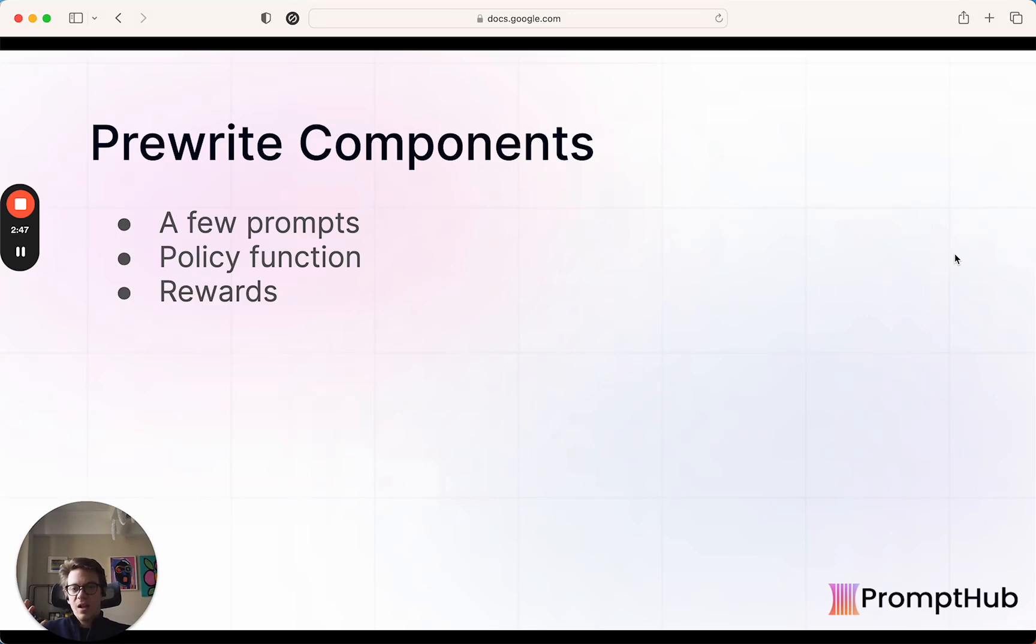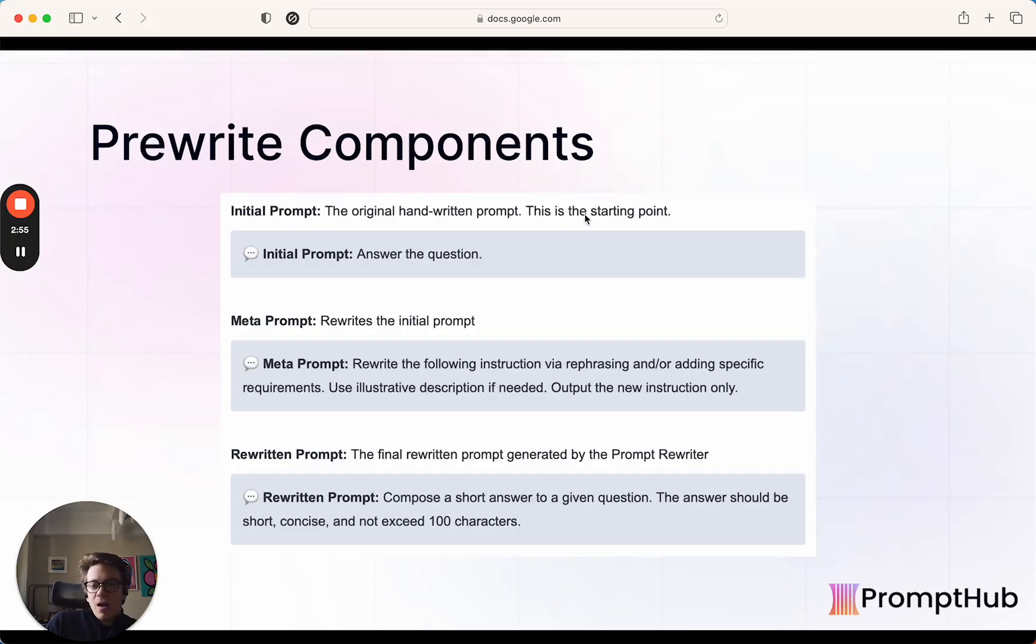And so there's a couple of components, two major components, just the policy function and the rewards. But we'll look at a few of the prompts used, starting with an example here. So here's an initial prompt. The prompt itself is just answer the question. It would get fed to the meta prompt, the rewriter prompt that says, you know, rewrites the prompt, add specific requirements, blah, blah, blah. So this could be the initial rewriter prompt. And then it gets a rewritten prompt that says here, and that gets fed to the frozen LLM for the task generation. Just a quick example of what that looks like.